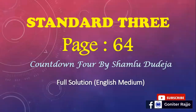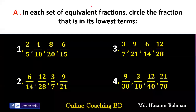As-salamu alaykum. Today we will solve page 64 from Countdown 4. Number A says: in each set of equivalent fractions, circle the fraction that is in its lowest term.